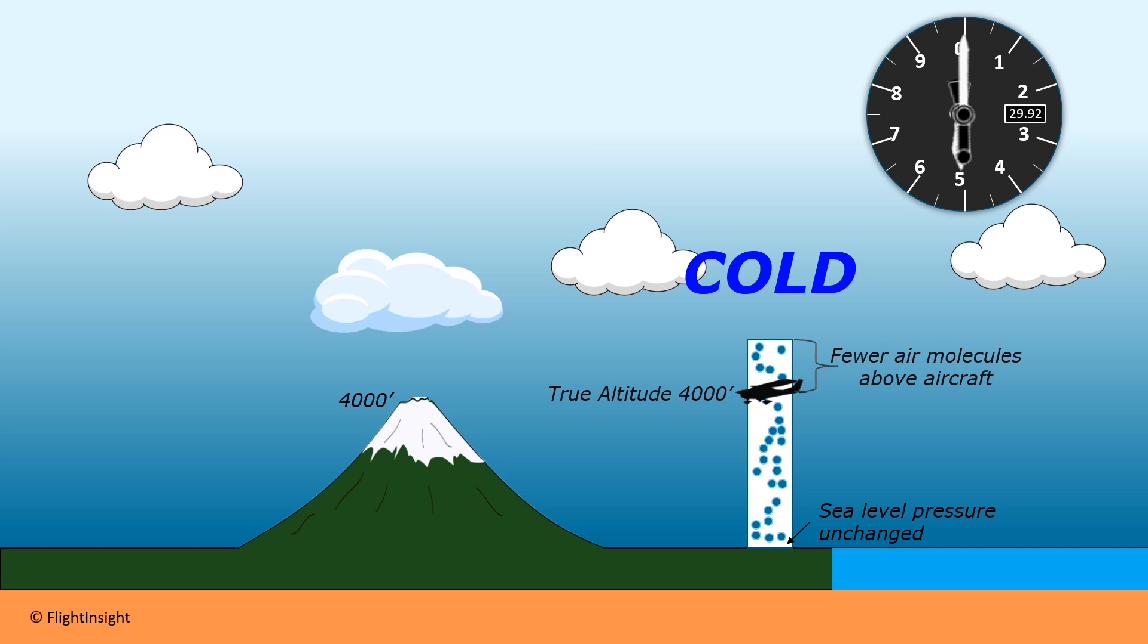Now, if we're going to maintain a constant 4,000 indicated altitude, we would have to descend, putting us at greater risk of impacting terrain. This is why we say high to low, look out below. Going into colder temperatures puts us at risk of terrain if we keep our altimeter at the same indication.